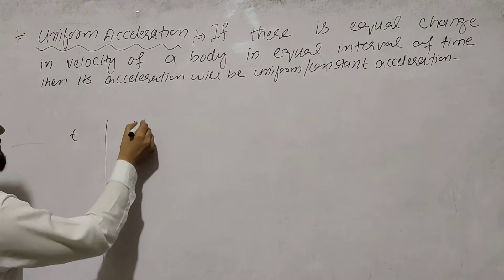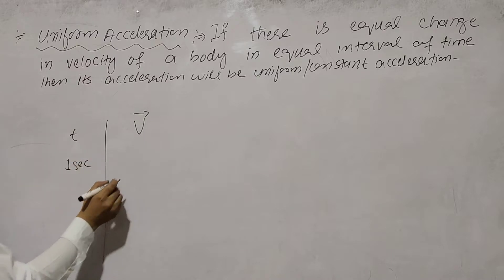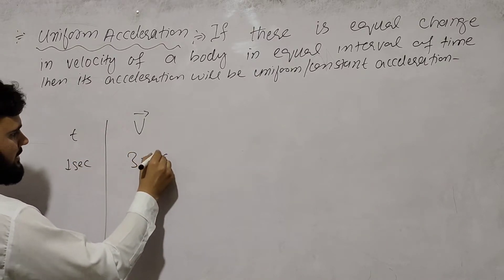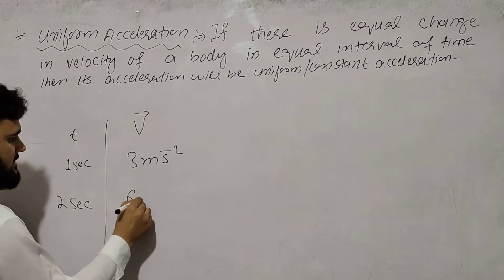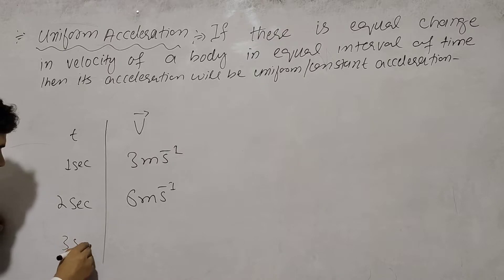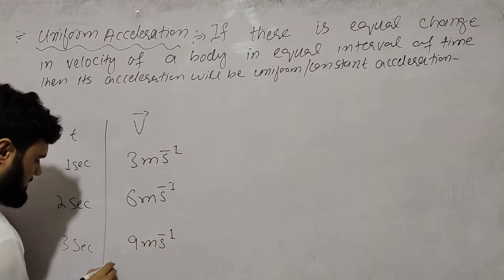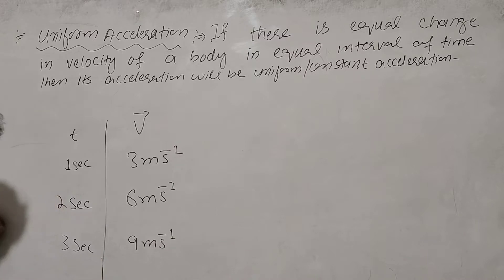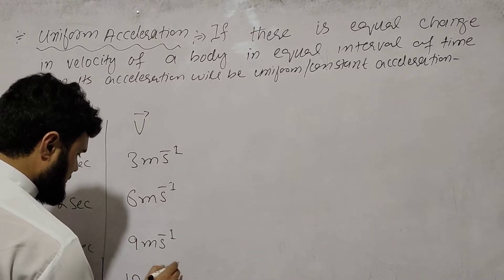Let's take a numerical example. Suppose at time zero the body's velocity is 3 meters per second. At the first second the body's velocity is some value, and at the fourth second the body's velocity is 12 meters per second. Let's suppose these values and observe the changes.